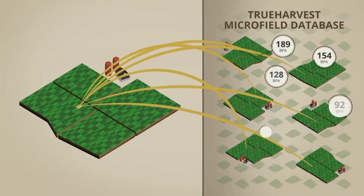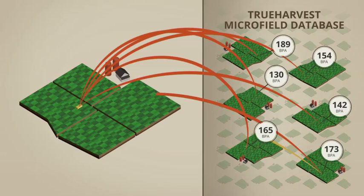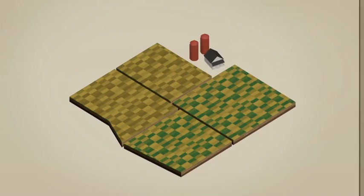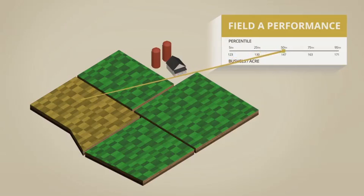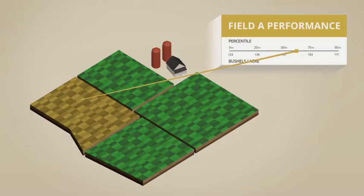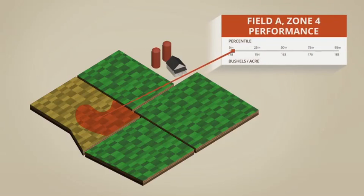This provides you with a True Harvest Benchmark, a benchmark you've never had before. You'll be able to see where on the performance curve your field performs, and you'll also be able to see zones within fields and the performance curves of those zones, which can vary greatly within a single field.